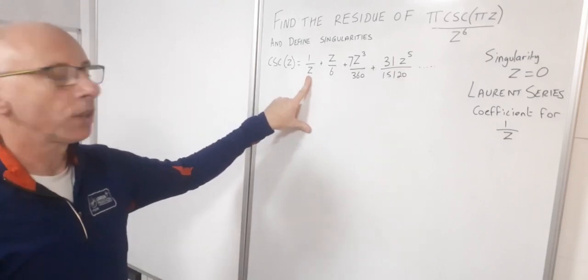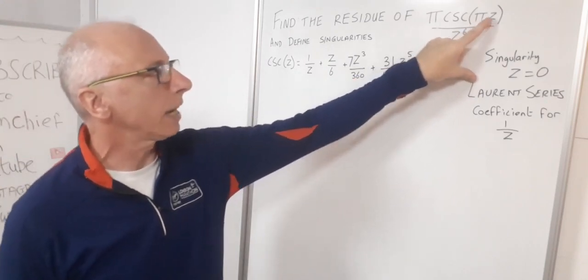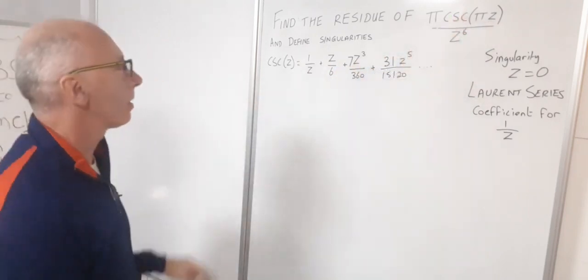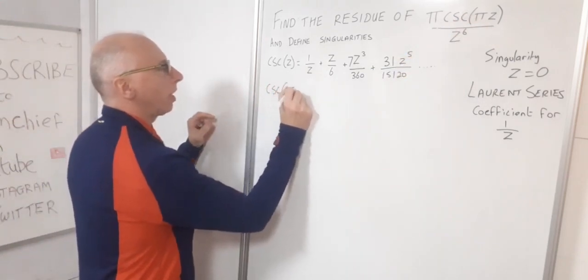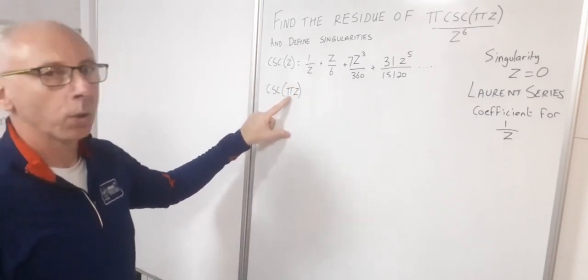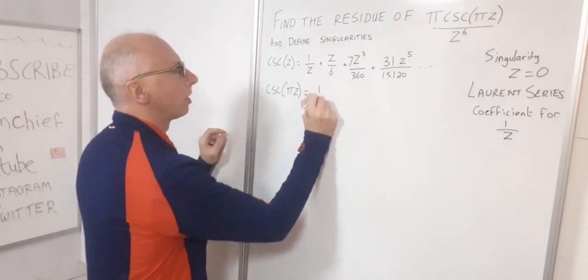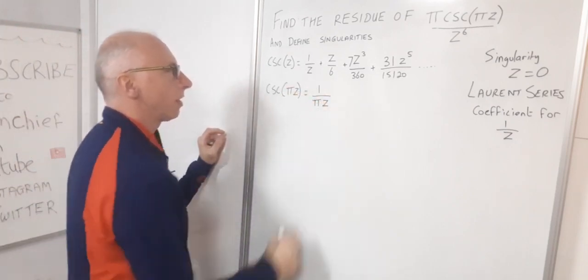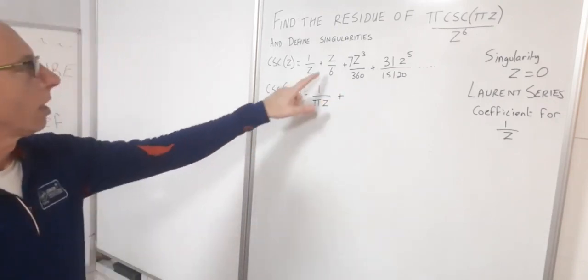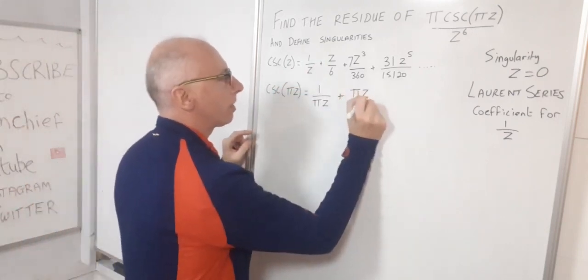Now we've got a 1 over z term here and the coefficient of that is 1. Well that's no good to us because we've got cosecant of πz multiplied by π. So let's plug the π into our z here and see where that takes us. So the cosecant of πz. So whenever we see a z now we're going to plug in a multiple of π as its coefficient. So then we get 1/(πz). So that will stay in the denominator and then plus πz/6.